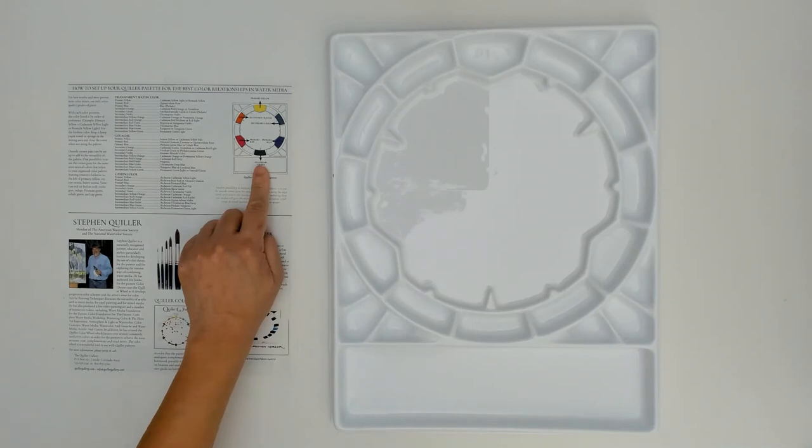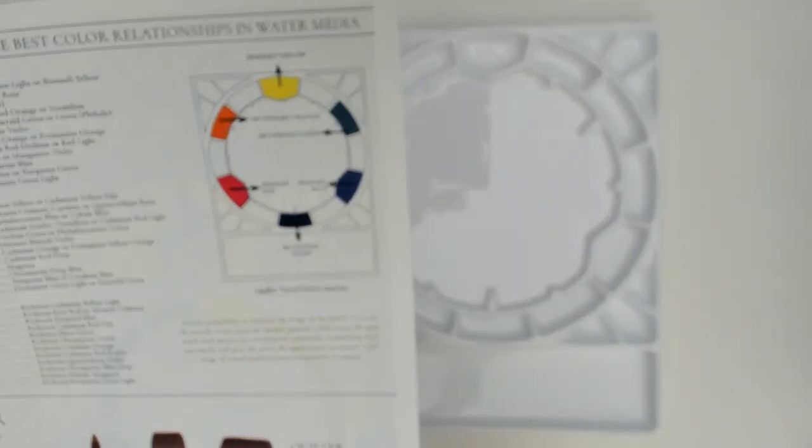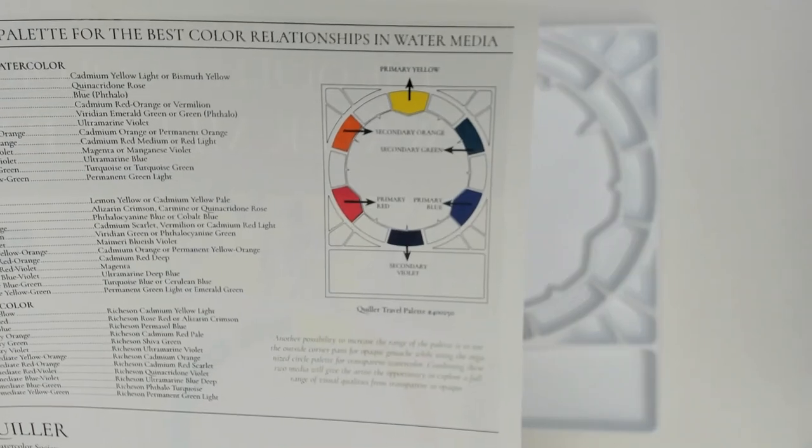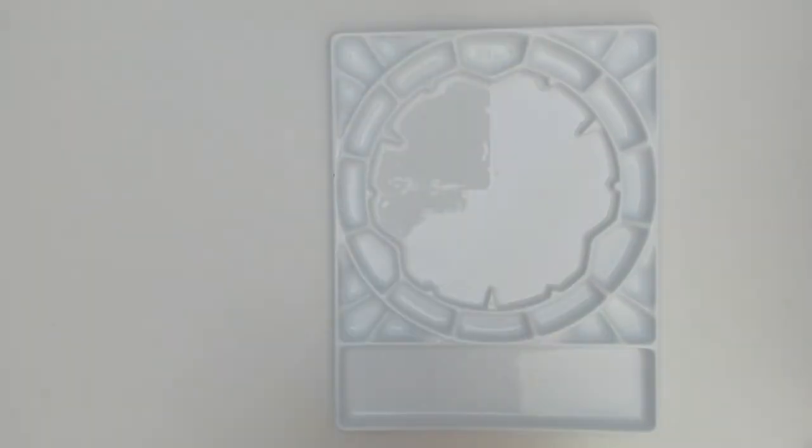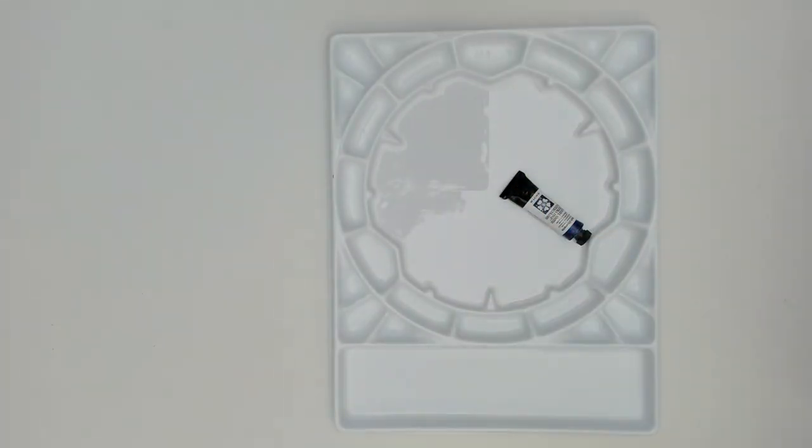The wells with arrows are where you're supposed to put your primary colors, and then the secondary colors go in between those primary colors. They have a recommendation on the instructions on where you're supposed to put each color as it relates to the color wheel.